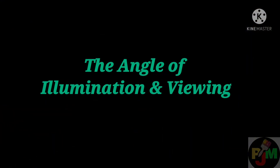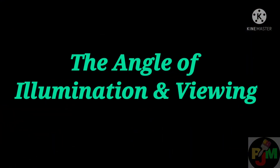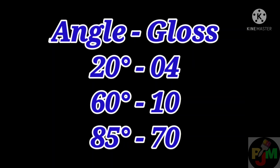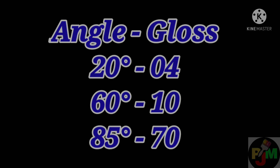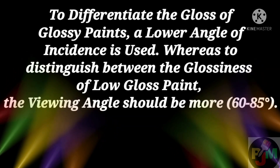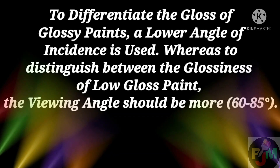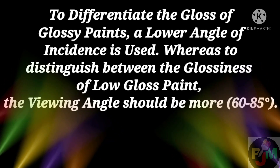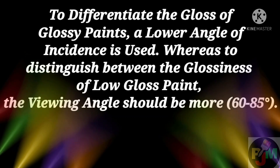The angle of illumination and viewing: intensity of reflected light increases as the angle of incidence increases with respect to normal. These are the values of gloss of the same painted surface viewed at different angles. To differentiate the gloss of glossy paints, a lower angle of incidence is used. Whereas to distinguish between the glossiness of low gloss paint, the viewing angle should be more, that is 60 to 85 degrees.